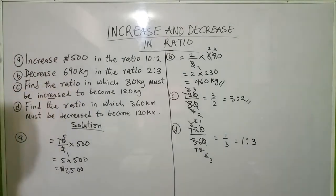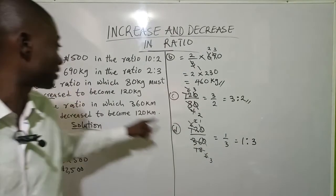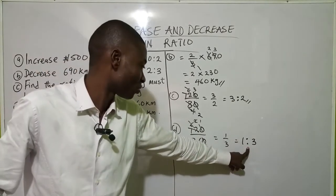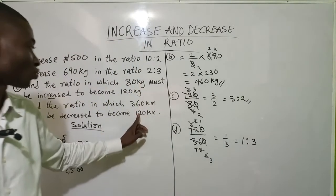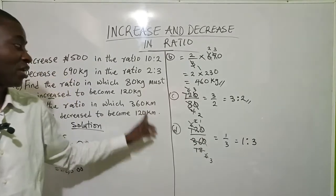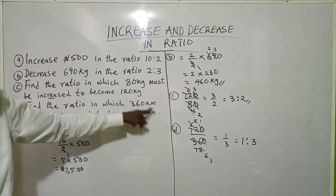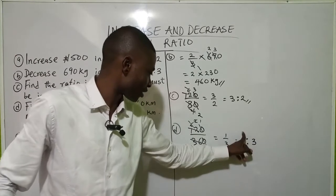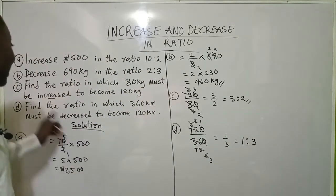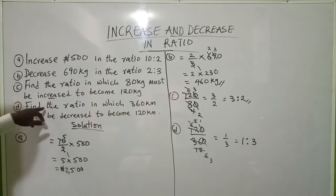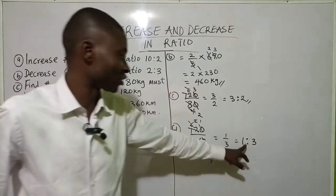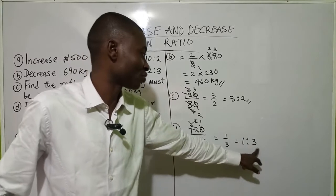So you know that if I decrease 360 kg using this ratio, our answer will be 120 kg — because that is exactly what the question asked us to find. The ratio is 1:3.